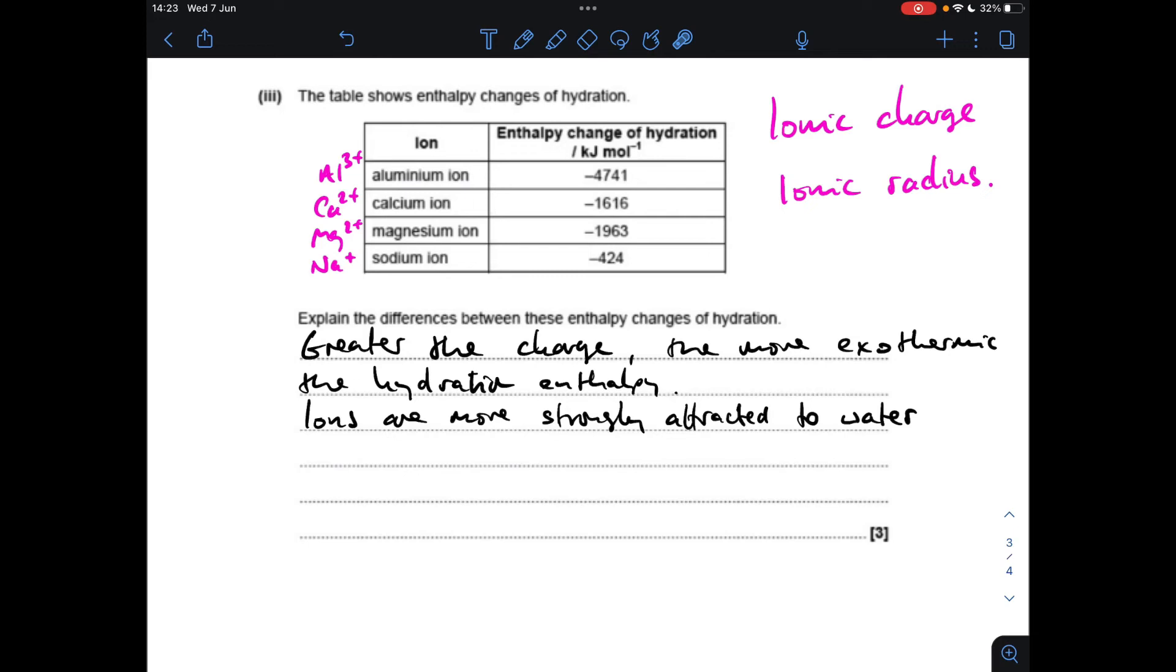So that's the first factor covered. So ionic radius - we can explain using the two two plus ions, calcium two plus and magnesium two plus. So you'll notice the calcium two plus is the less exothermic of the two. So why is that? It's got a larger ionic radius than magnesium ions, extra shell, and so therefore there'll be a weaker attraction with the water molecule for the calcium two plus ion compared to the magnesium two plus.